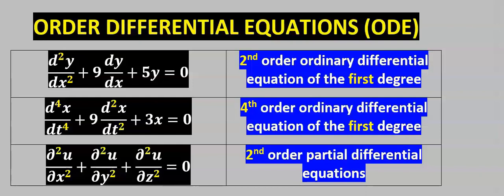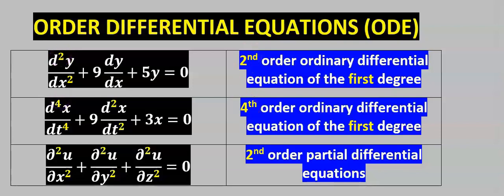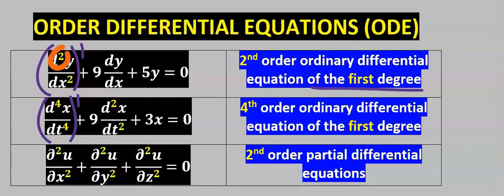The highest derivative determines the order of the differential equation. For example, if the highest order is 2, we have a second-order differential equation. If the highest order is 4, we have a fourth-order differential equation. The degree refers to the power of the highest derivative term. This is the second-order ordinary differential equation of the first degree.